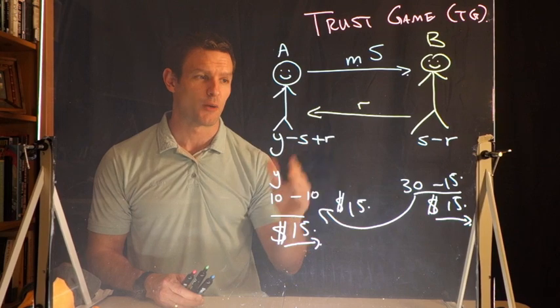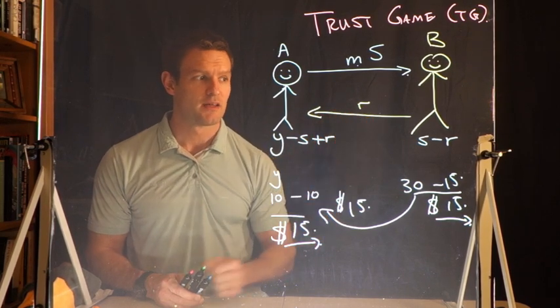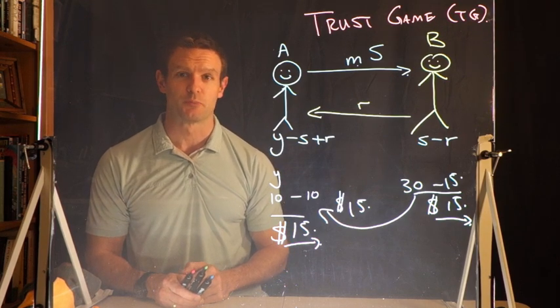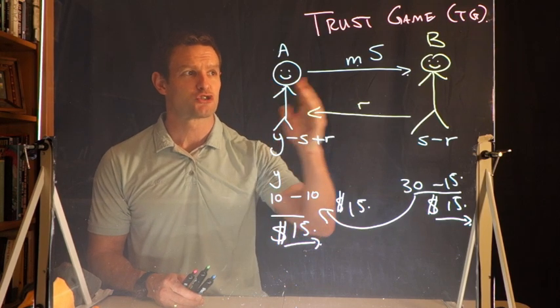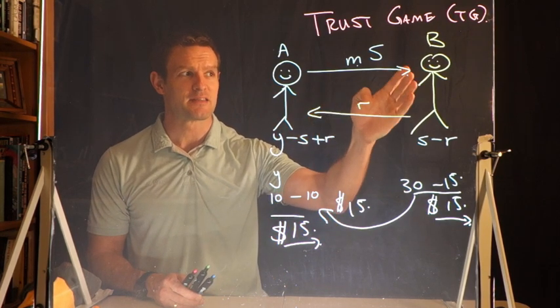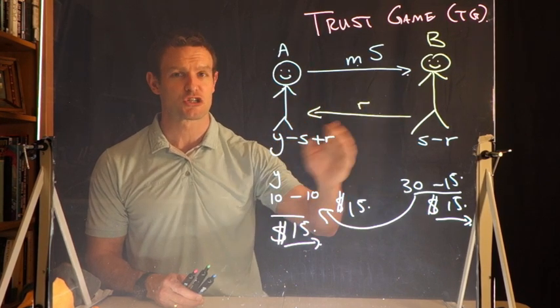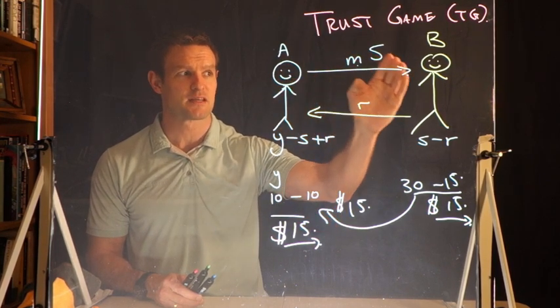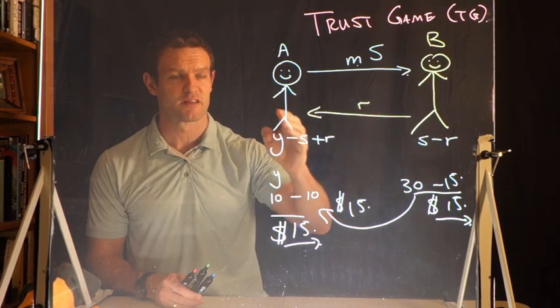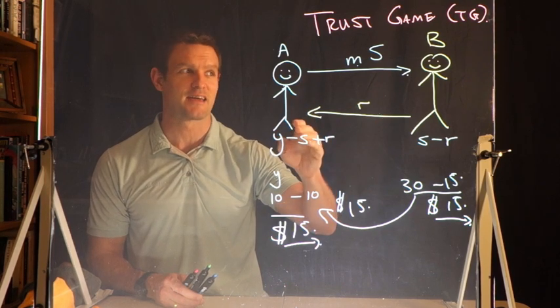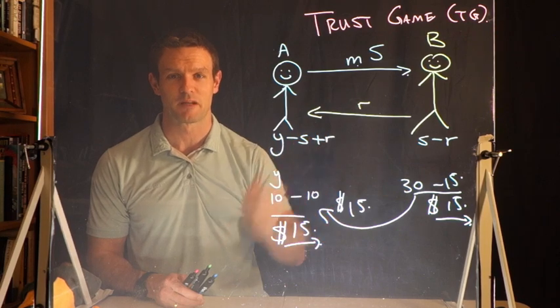Depending on the game structure, different people use different terminology for the players. The original game goes back to Berg, Dickhaut, and McCabe. They wanted to understand what happens when A sends some amount to B, and B can choose to reciprocate. There's a reciprocal relationship: A sends something to B, B can reciprocate with trustworthy behavior by sending money back to A.